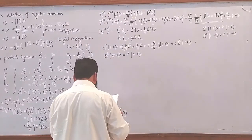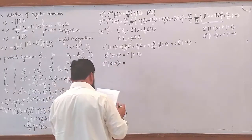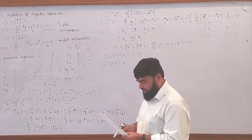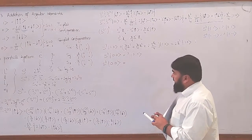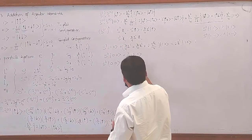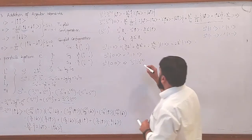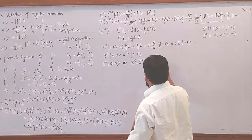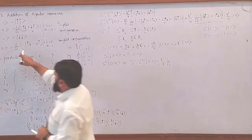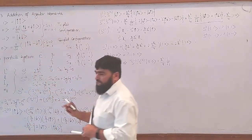When S² operates on |0,0⟩, what will we get? To find out, we will first calculate the S₁·S₂ term. So it will be S₁·S₂ applied on |0,0⟩. The result will be ℏ²/4, with a factor of 1/2 coming from this. The state is up-down and down-up, and only the minus sign will be replaced.